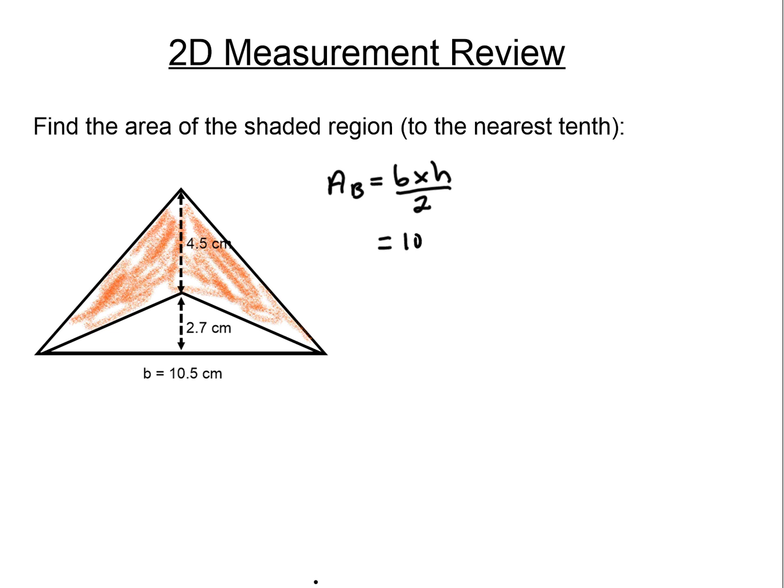The base is 10.5. Now this one's a little tricky. The height is the height for the big triangle, which is not 4.5, it's 4.5 plus 2.7. So it's actually 7.2.